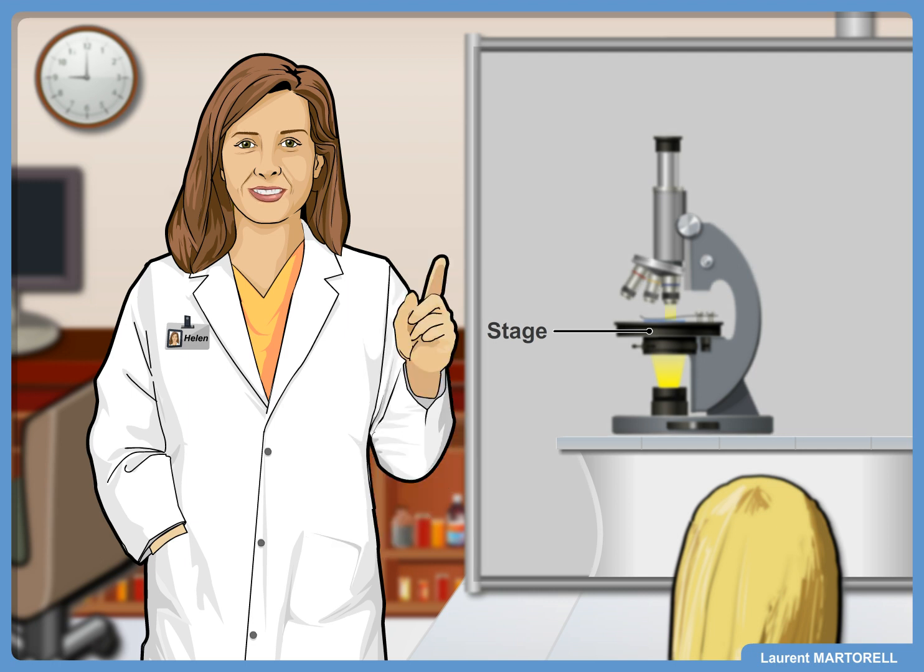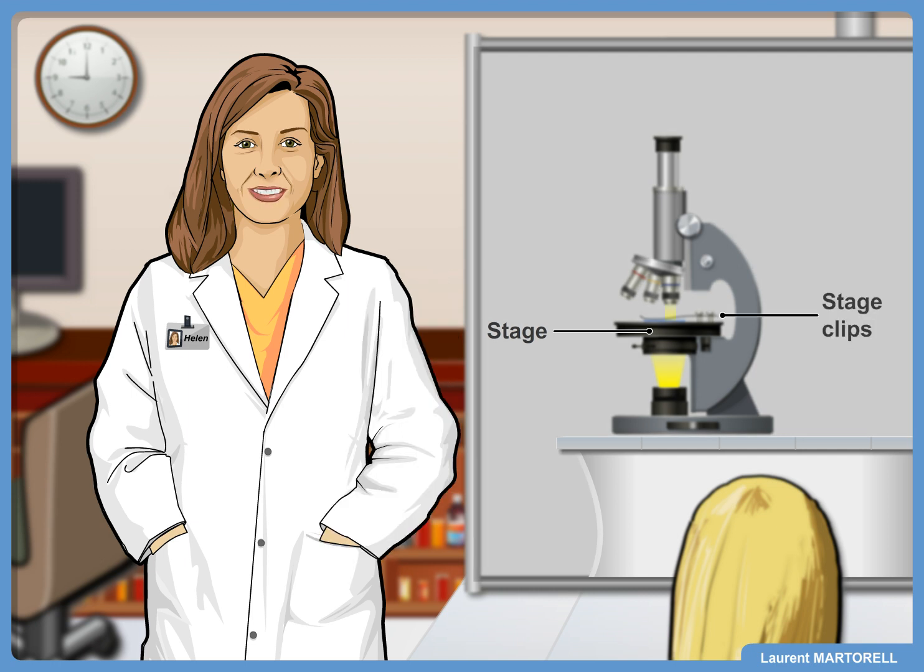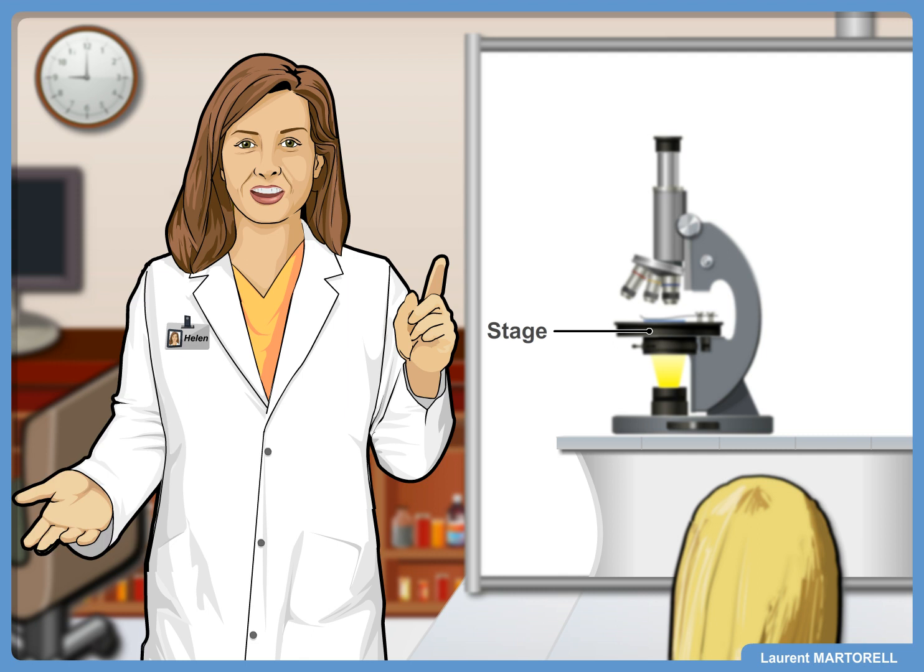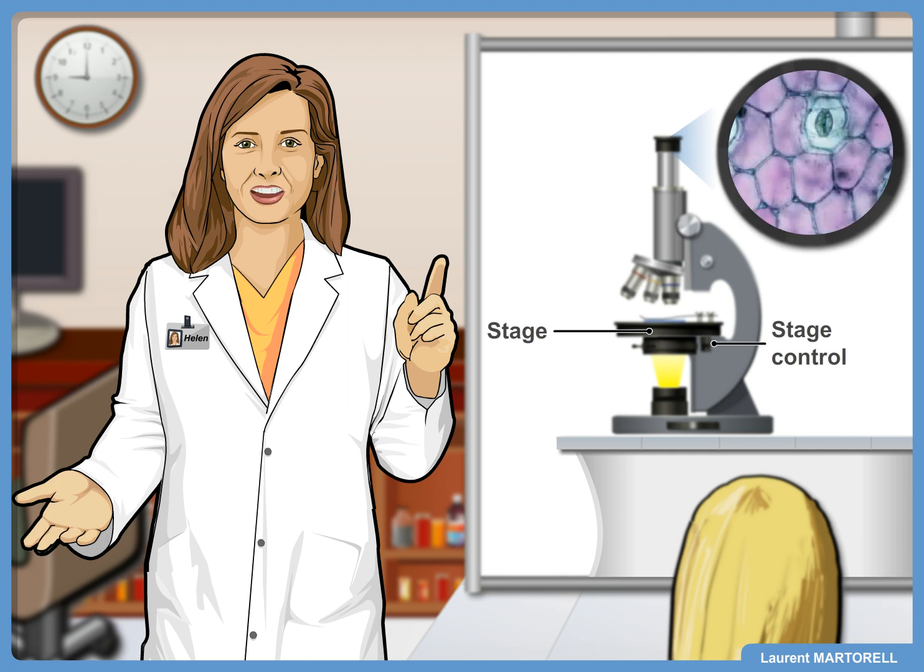There is a knob below the stage. What's it for? Good point. The knob is the stage control, so you can look at different parts of your slide without having to move your hand.